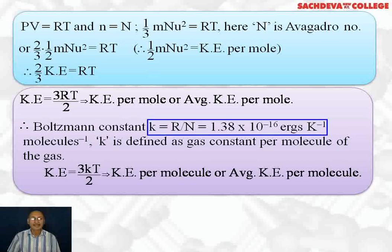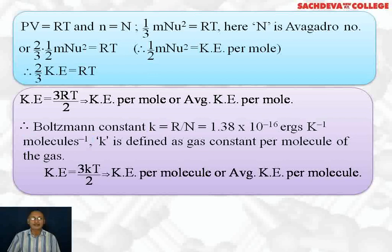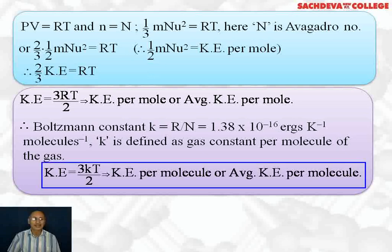Boltzmann constant K is equal to R over N, where N is Avogadro's number and R is the gas constant. Its value is 1.38 × 10⁻²³ ergs per kelvin per molecule. K is defined as the gas constant per molecule of the gas, whereas R was the gas constant per mole of the gas. So kinetic energy per molecule equals (3/2) KT, which is the average kinetic energy per molecule.